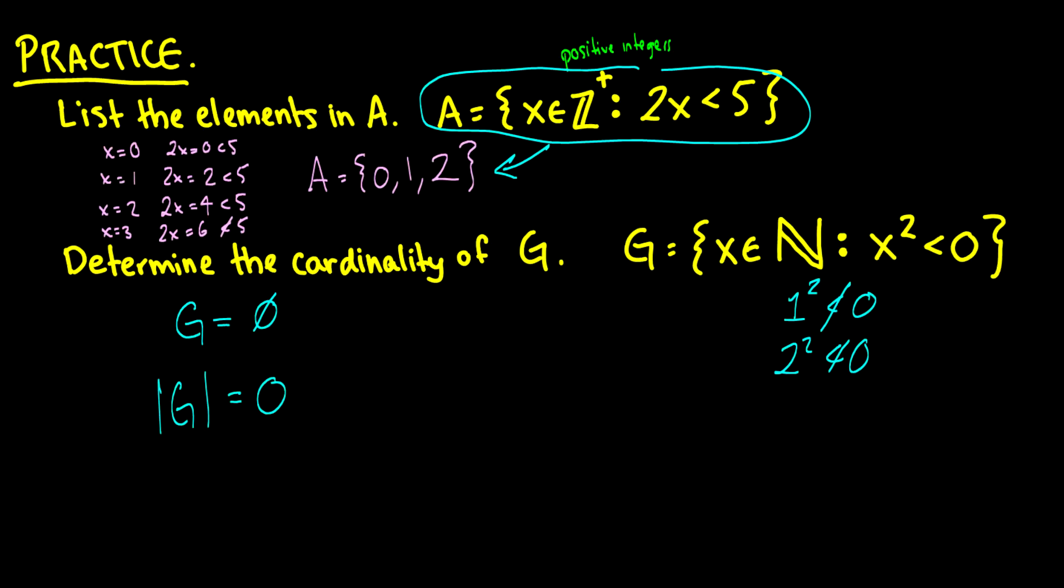The empty set has a cardinality of 0. And of course, cardinality is size. So what is the size of the empty set? The empty set has no elements, therefore the size is 0.